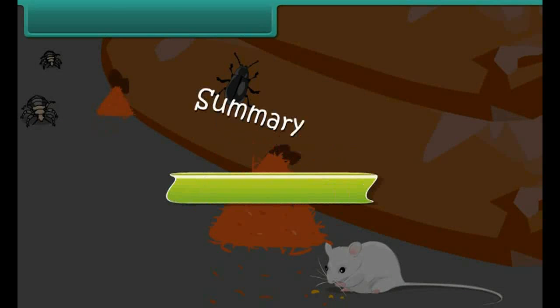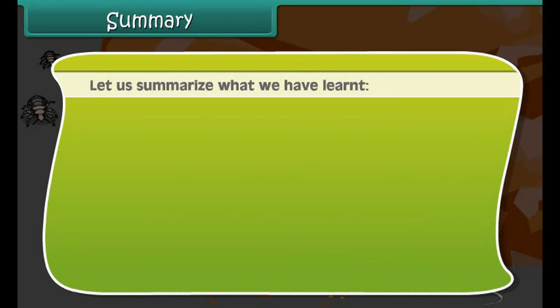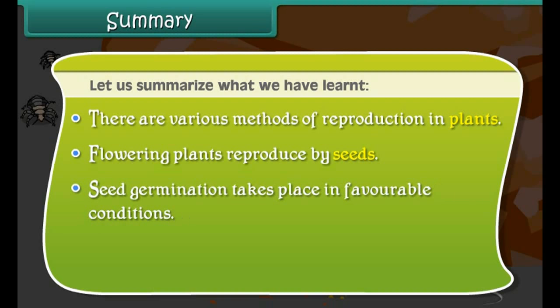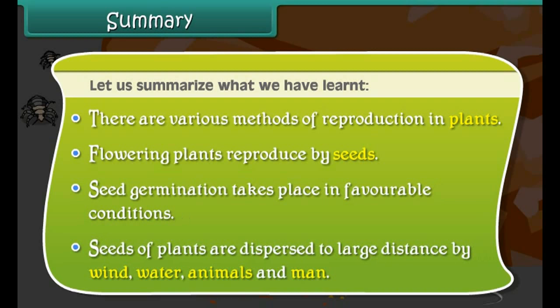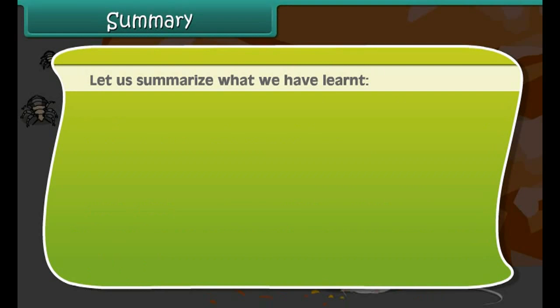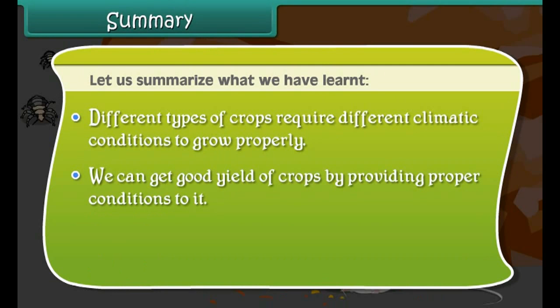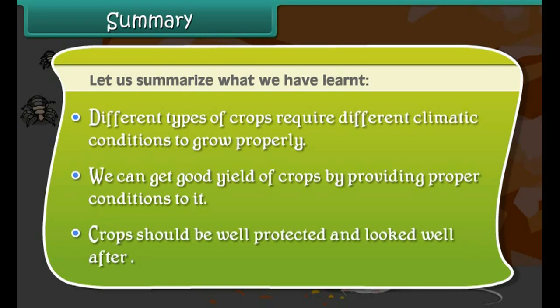Summary: There are various methods of reproduction in plants. Flowering plants reproduce by seeds. Seed germination takes place in favourable conditions. Seeds of plants are dispersed to large distances by wind, water, animals, and man. Different types of crops require different climatic conditions to grow properly. We can get a good yield of crops by providing proper conditions, and crops should be well protected and looked after.